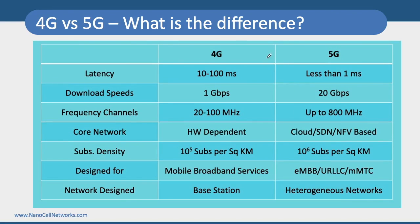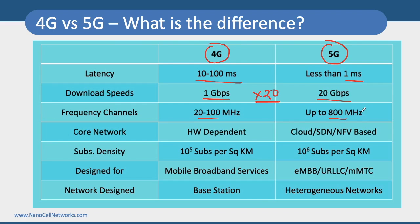4G and 5G networks are going to be very different. We are expecting latencies of one millisecond compared to 10 to 100 milliseconds in 4G. Data rates of 20 Gbps compared to 1 Gbps in 4G — that is typically 20 times the peak data rate. Frequency channels are going to be up to 800 MHz channel bandwidth. The core network in 4G is hardware-dependent, however in 5G it is going to be cloud-based, enabled by SDN and NFV kind of technologies.